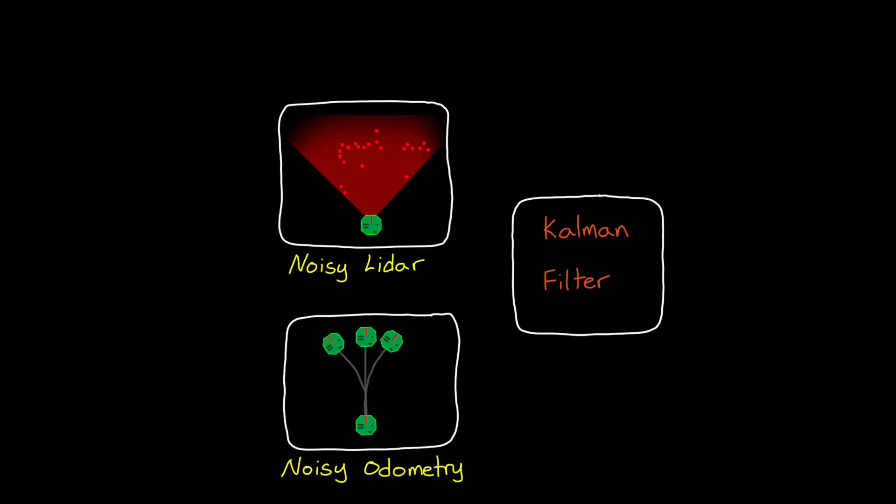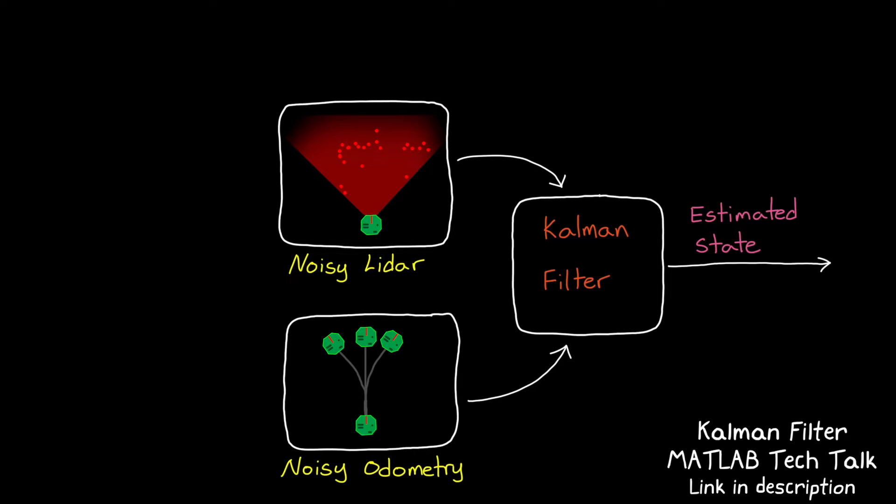So we have two possible ways to determine location. We have a noisy LiDAR sensor that senses features that we can compare to a map of the environment, and we have noisy odometry data that estimates how the robot is moving. Now if you're familiar with the Kalman filter, you might recognize that blending a noisy measurement with a noisy process model is exactly what it's used for. And if you're not familiar with Kalman filters, you can get up to speed by watching the MATLAB Tech Talk series on them that I've linked to in the description below.